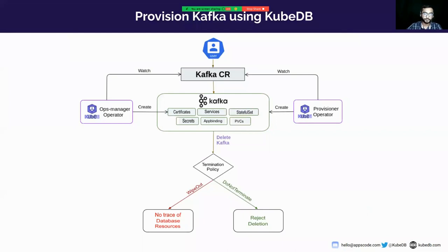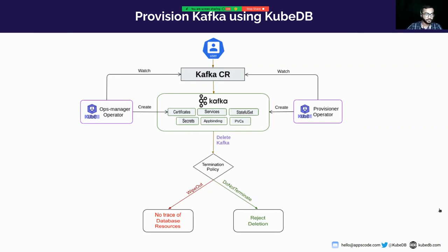To provision Kafka using KubeDB, we need to apply a Kafka custom resource (CR). After applying the CR, two operators — the ops manager operator and the provision operator — watch the Kafka custom resource. The provision operator creates StatefulSets, services, secrets, AppBinding, PVCs, etc. The ops manager operator creates certificates using cert-manager. When deleting Kafka, if the termination policy field is set to 'WipeOut', the operator removes all created resources. If it is set to 'DoNotTerminate', the operator will reject deletion of the Kafka cluster.